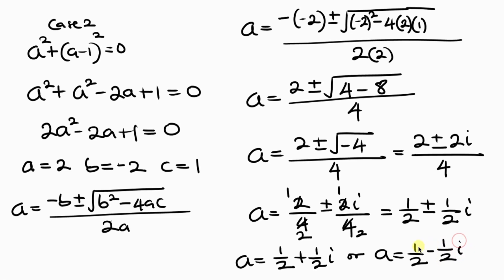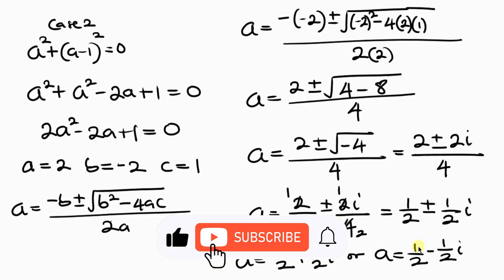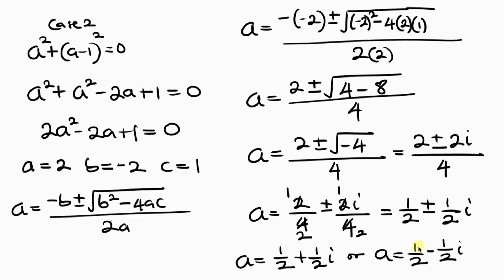So we have 3 total values of a, of which one is a real solution and the other two are complex solutions. Feel free to share your ideas in the comment section below. If you enjoyed this video and learned something, give it a thumbs up, subscribe, and turn on the notification bell so you don't miss upcoming videos. Until next time, take care.